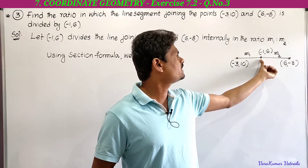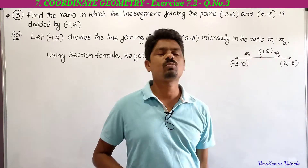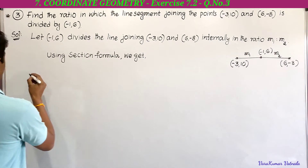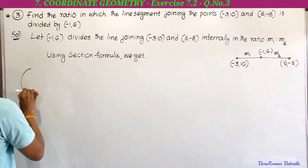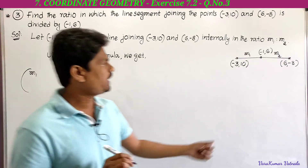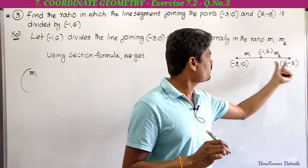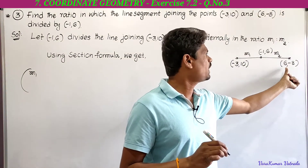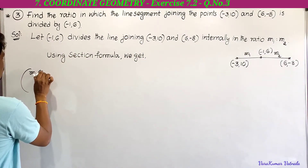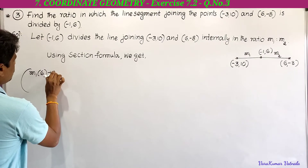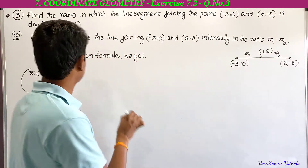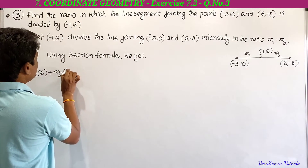The point which divides the line joining these two points is (-1, 6). We need to find m1 and m2. So m1·x2 = m1 × 6, since x2 = 6. And m2·x1 = m2 × (-3), since x1 = -3.